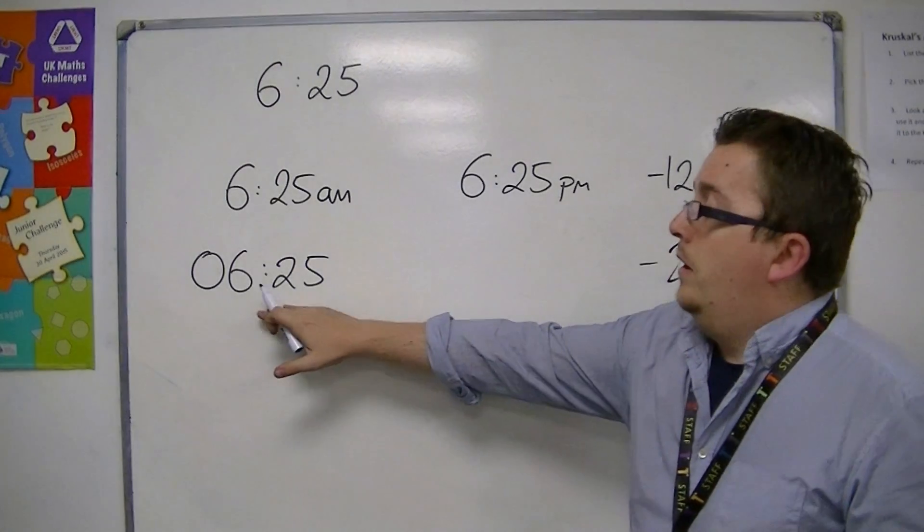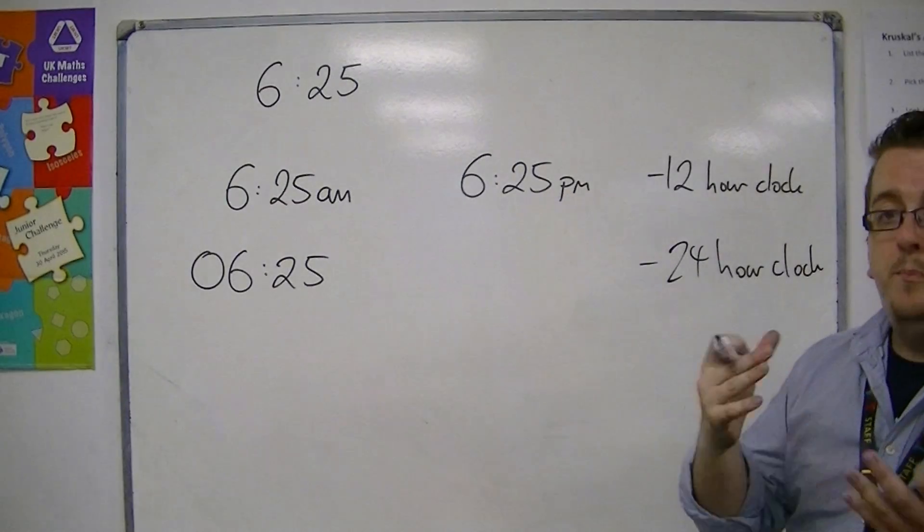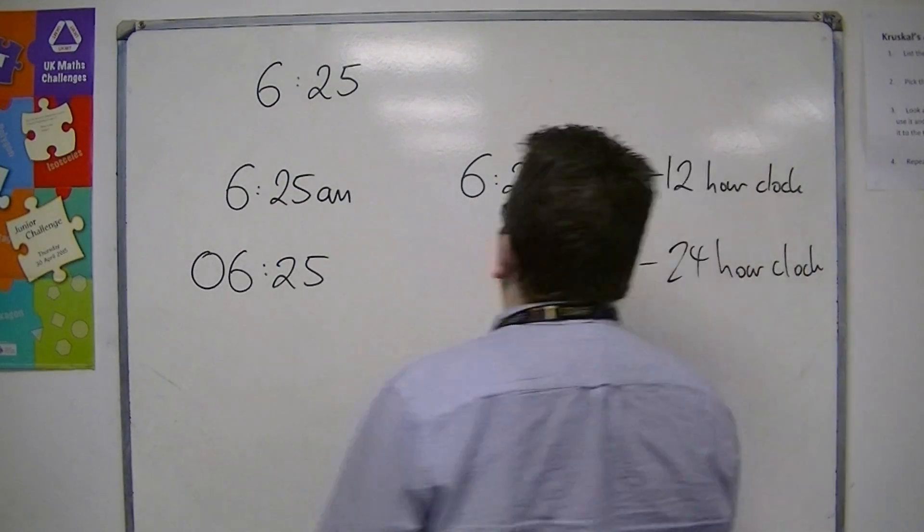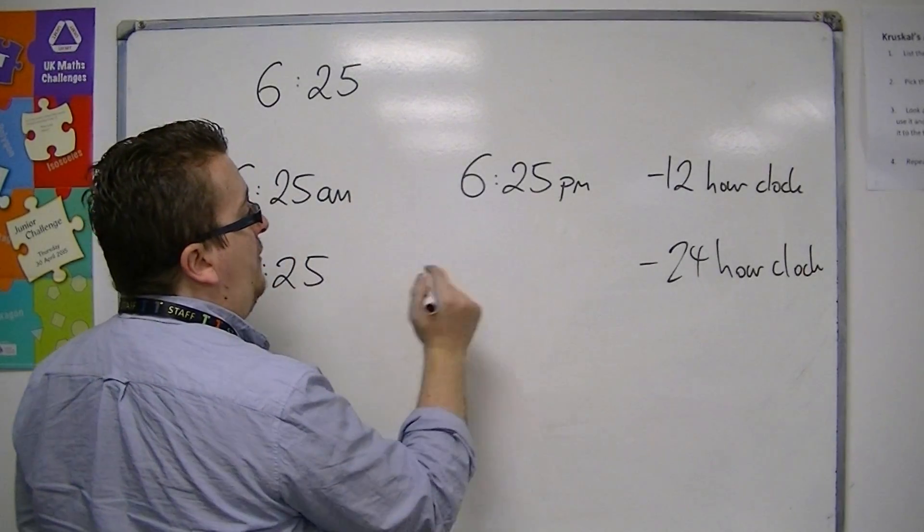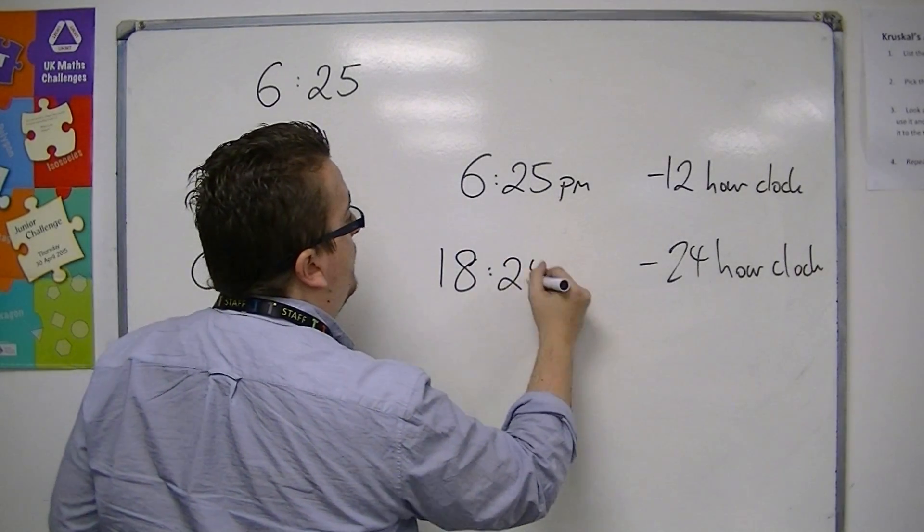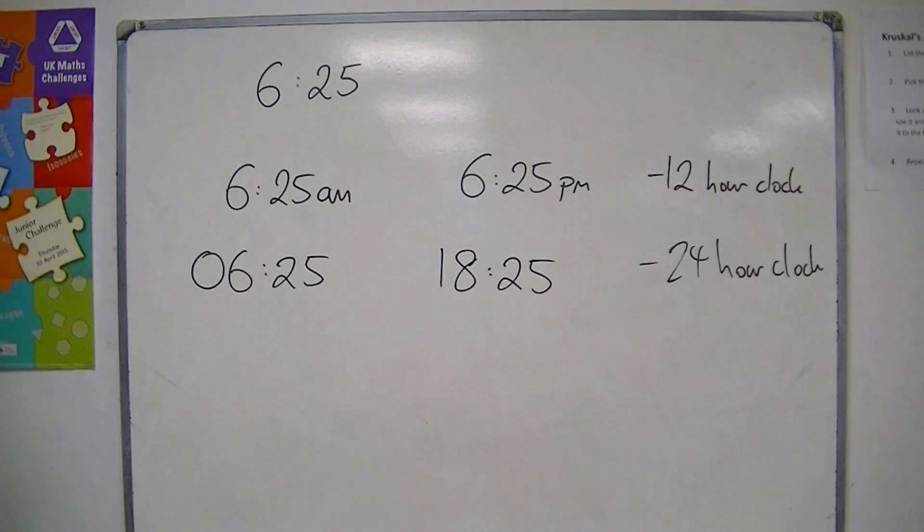And so, 6.25pm is related to the first 12 hours of the day, plus the 6.25. So this is 18.25, so this is 18.25 in 24 hour clock.